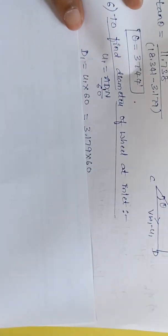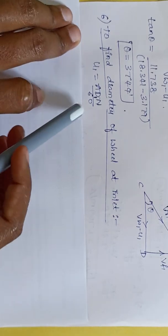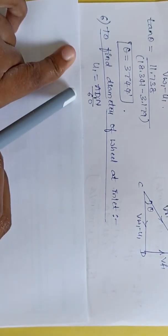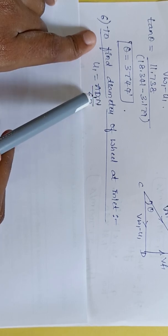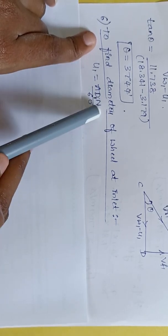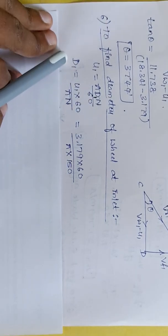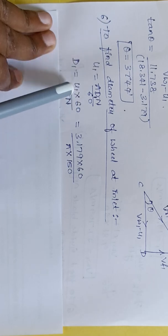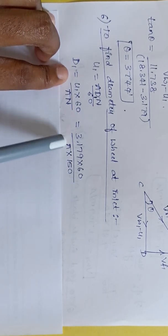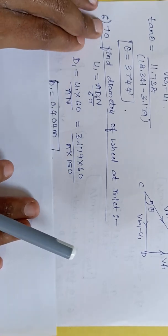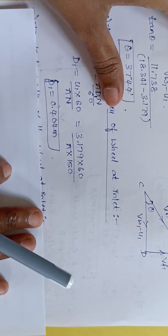To find the diameter of the wheel at inlet D1, we use the peripheral velocity formula u1 = π × D1 × N / 60. Rearranging: D1 = (u1 × 60) / (π × N) = (3.179 × 60) / (π × 150) = 0.404 meters.